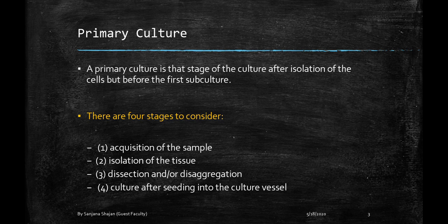A primary culture is the stage of a culture after isolation of the cells but before the first subculture. To obtain a primary culture there are four stages: acquisition of the sample, isolation of tissue, dissection or disaggregation, and culturing after seeding into the culture vessel.